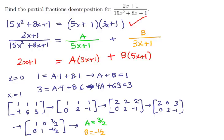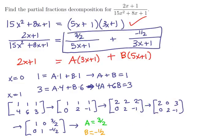We need to plug these values back into the partial fractions decomposition. Replacing A with 3/2 and B with -1/2 gives (3/2)/(5x+1) - (1/2)/(3x+1). We can also write this as (3/2)·1/(5x+1) - (1/2)·1/(3x+1). Either form is appropriate, though the latter is helpful for calculus.